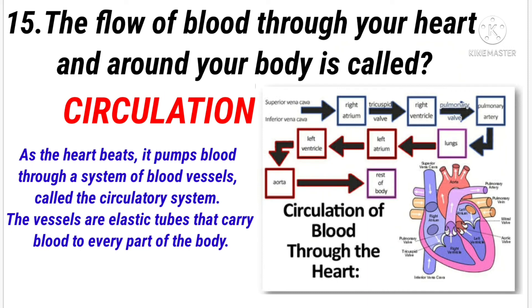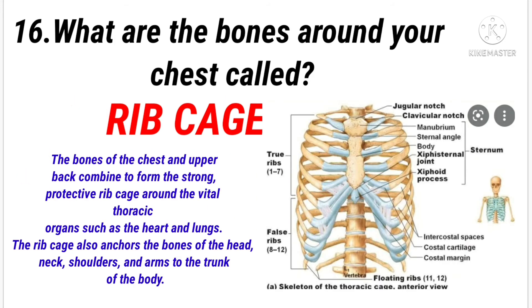The flow of blood through your heart and around your body is called? Answer: Circulation. What are the bones around your chest called? Answer: Ribcage.